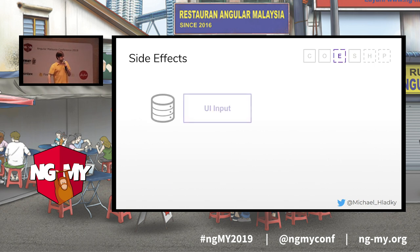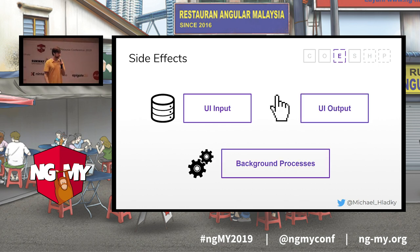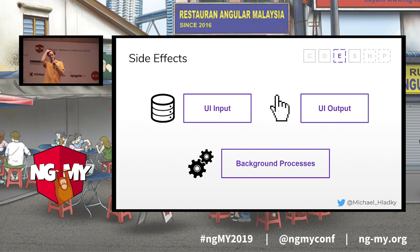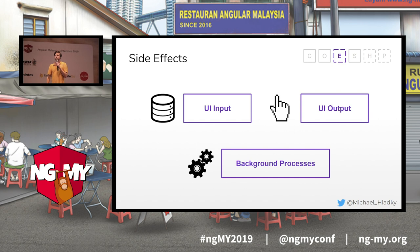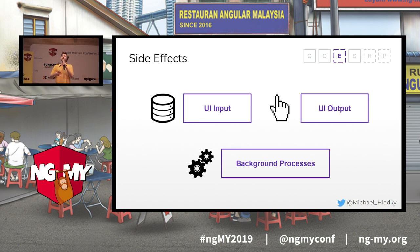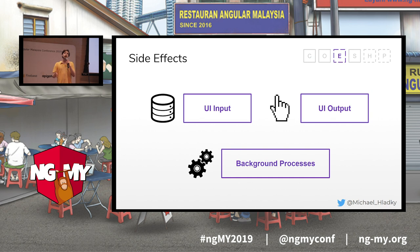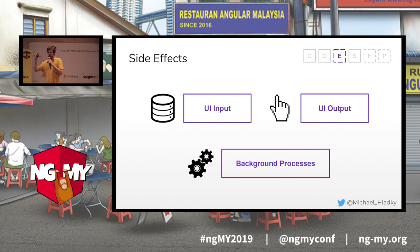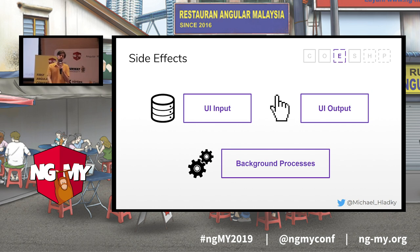Side effects — I group them into three different categories: user input side effects, user interface output side effects, and background processes. Input side effects are things where I receive some state and I want to render this state to my view. User interface output observables are generated from button clicks, user input elements, select options, and so on. Background processes could be anything else running in the background — a pending HTTP request, a web socket sending messages, or as we do here, a simple tick — a simple time interval.